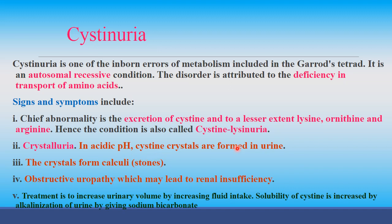Cystinuria may also cause cystine crystalluria — crystals of cysteine are formed in urine. These crystals form calculi, also known as stones, causing obstructive uropathy which may lead to renal insufficiency. Treatment involves increased urinary volume through increased fluid intake, which dissolves cysteine crystals, and alkalization of urine with sodium bicarbonate, which can also solubilize cysteine crystals.